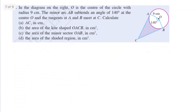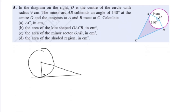Question 5. O is the center of a circle with radius 9 cm. Minor arc AB subtends an angle of 140 degrees at the center, and tangents AB meet at C. A tangent always meets the radius at 90 degrees. The two tangent lengths from an external point are equal, and the line from the center bisects the angle between the radii. So we split this into two right angle triangles, and the half angle is 140 divided by 2 equals 70 degrees.